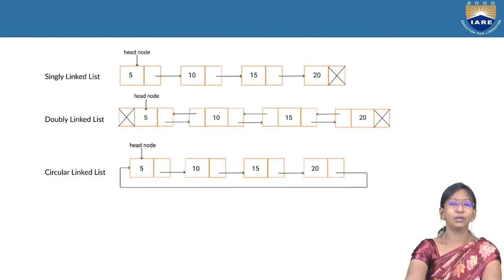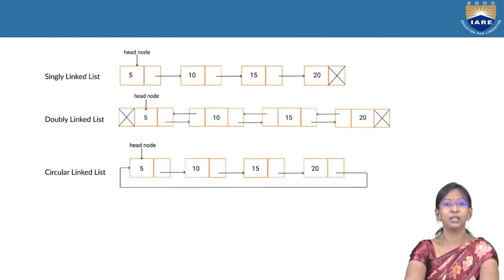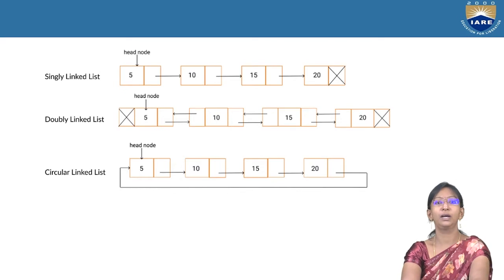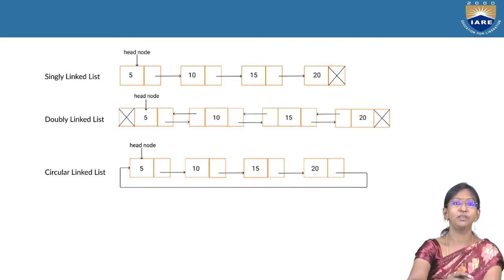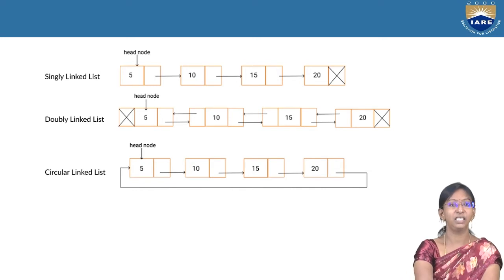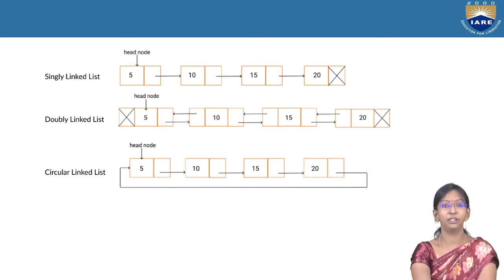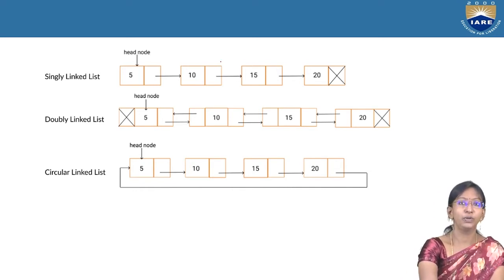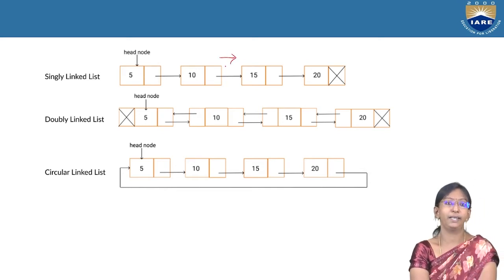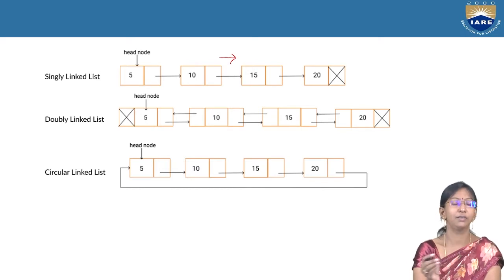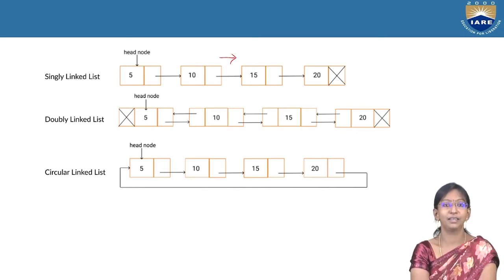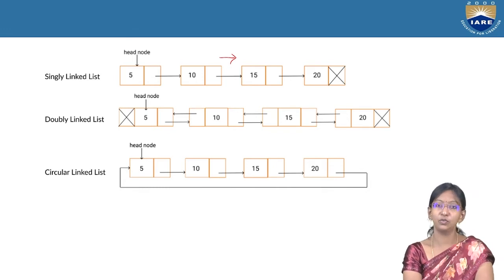In a single-linked list, every element is linked to the next element. You can see that 5 is linked to 10, 10 is linked to 15, and 15 is linked to 20. It runs only in forward direction — unidirectional. That itself is a drawback of single-linked list, but for simple implementations it is very good.